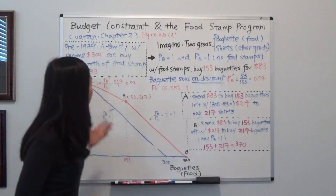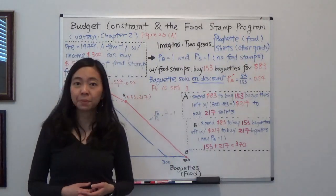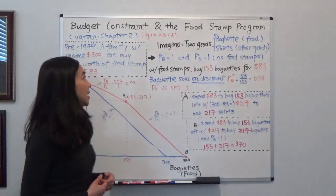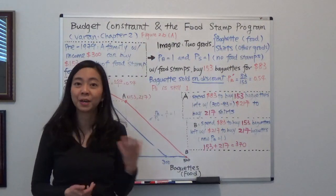In particular, this material is from Hall of Iran's Intermediate Microeconomics, Chapter 2, and I'm talking about figure 2.6, panel A.